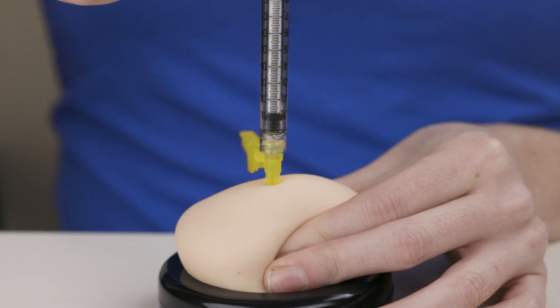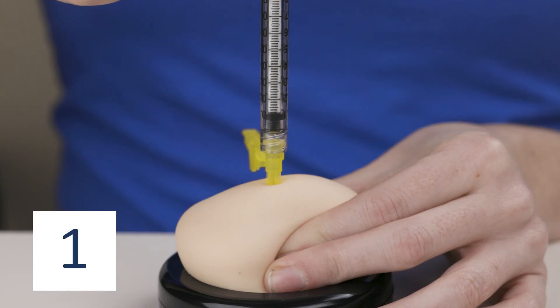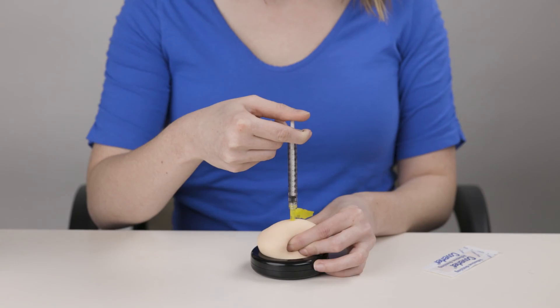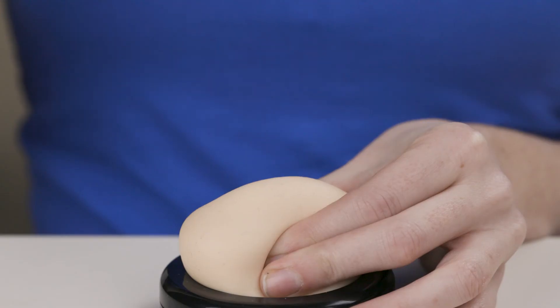Count slowly to 5 after all of the medication is injected. Then pull the syringe straight out of your skin. Let go of the pinched skin.